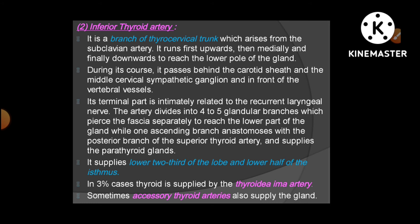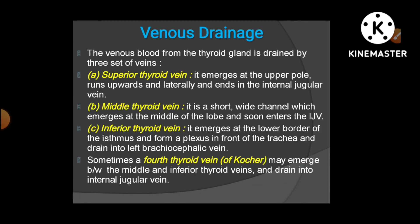The inferior thyroid artery supplies the lower two-thirds of the lobes and the lower half of the isthmus. To summarize: the upper one-third of the lobe and upper half of the isthmus are supplied by the superior thyroid artery, while the lower two-thirds of the lobe and lower half of the isthmus are supplied by the inferior thyroid artery. In three percent of cases, a thyroid ima artery is also present, and rarely an accessory thyroid artery may be found.